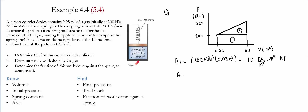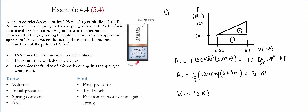For Area 2, it is a triangle, so it is one half times height times width. The height is the difference between 320 and 200, which is 120 kilopascals. The width is 0.1 minus 0.05, which is 0.05 meter cubed. This gives 3 kilojoules. Therefore, the total work done by the gas is 10 plus 3, equal to 13 kilojoules.